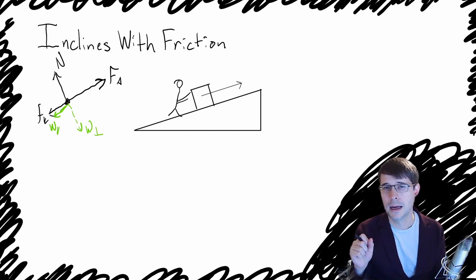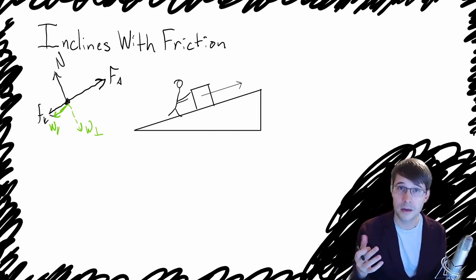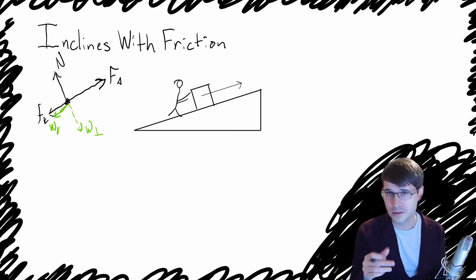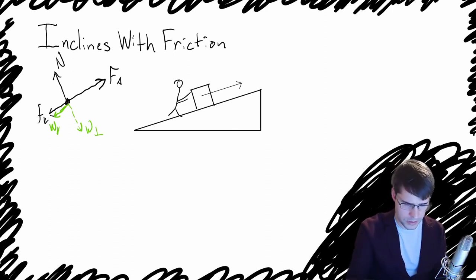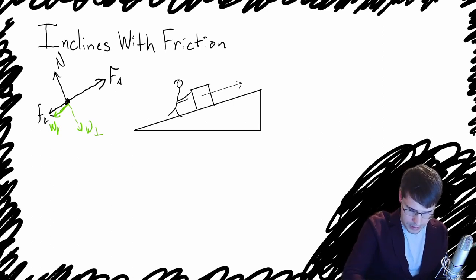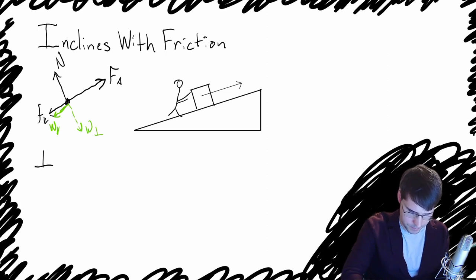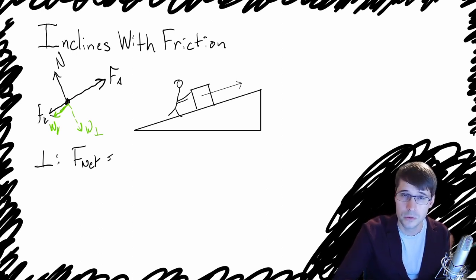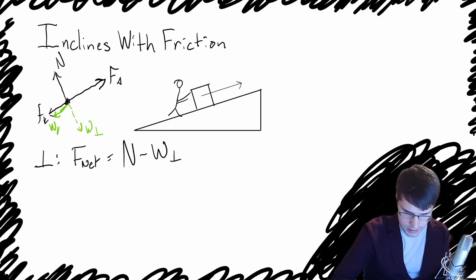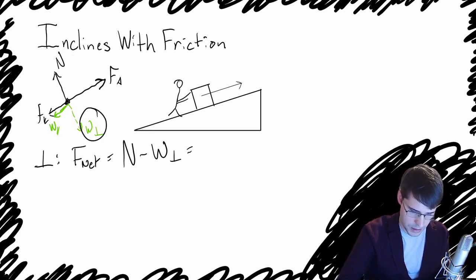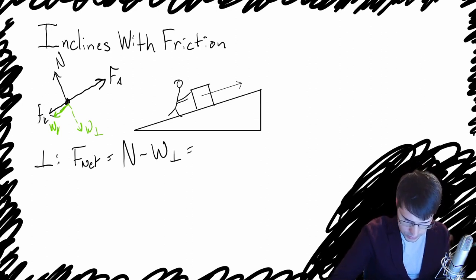So now we have five forces that we're going to be looking at. Two of them are components of the single weight force, but now we can deal with this just the way we've done with all these problems before. We're going to write out the sum of the forces. Let's start with the perpendicular direction. The net force in the perpendicular direction is going to be equal to the normal minus the weight perpendicular, equal to MA in the perpendicular direction.